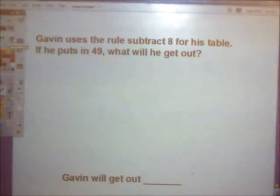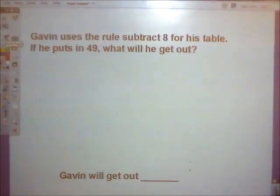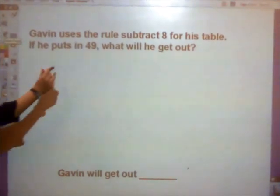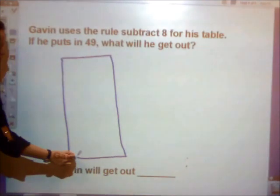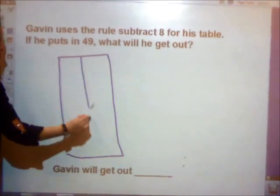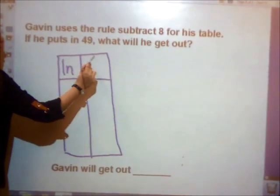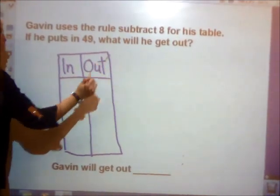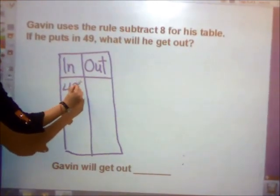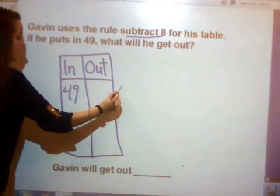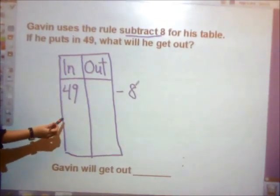Our next word problem says Gavin uses the rule subtract 8 for his table. If he puts in 49, what will he get out? I'm going to draw an input-output table from top to bottom this time. Remember, some go left to right and some go top to bottom. If I put a number in, I always need to get a number out. If Gavin puts in 49 and he subtracts 8, what will he get out? I'm going to use my tally marks to check.